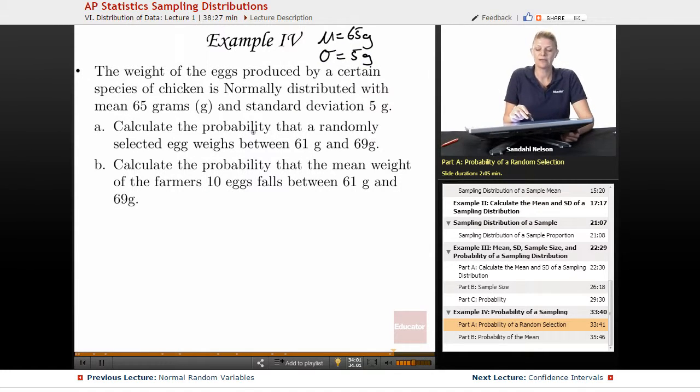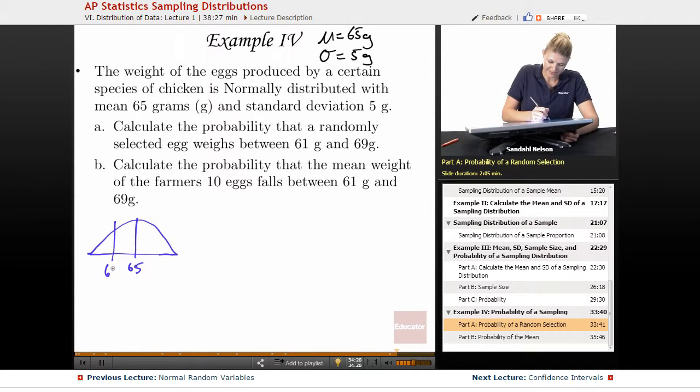Calculate the probability that a randomly selected egg weighs between 61 grams and 69 grams. That's no problem. That is something you have absolutely done, right? Okay, so a randomly selected egg, the mean is 65. We want to be between 61 and 69. So we're looking for this area.